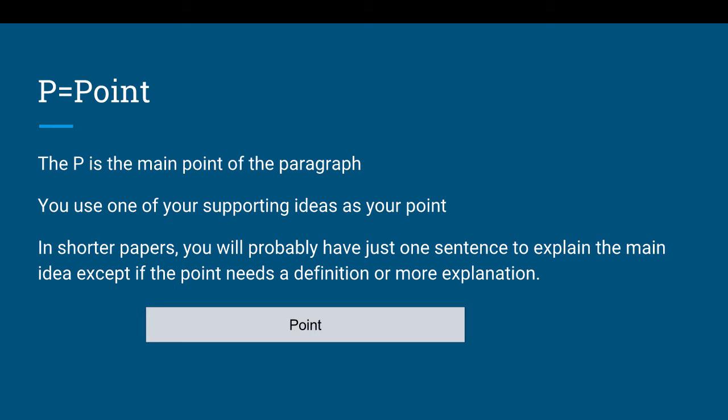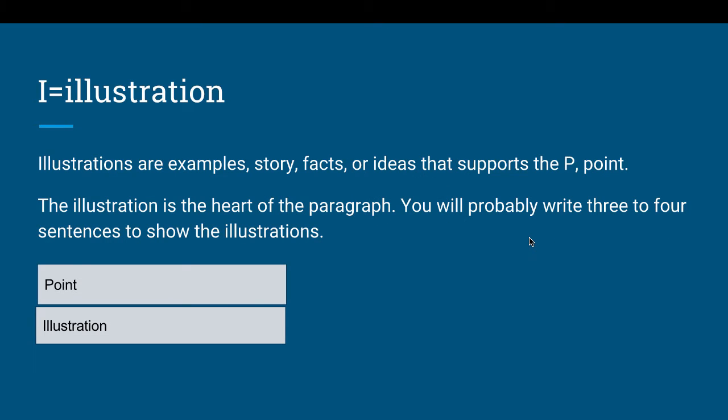In longer papers, you're going to probably have to discuss the point for two or three sentences before you get to the next thing, which is the illustration. Illustrations are examples, stories, facts, or ideas that support the point. It's the heart of the paragraph. You'll probably write three to four sentences to show the illustrations, although sometimes you can explain the illustration in one sentence, especially if it's a fact.